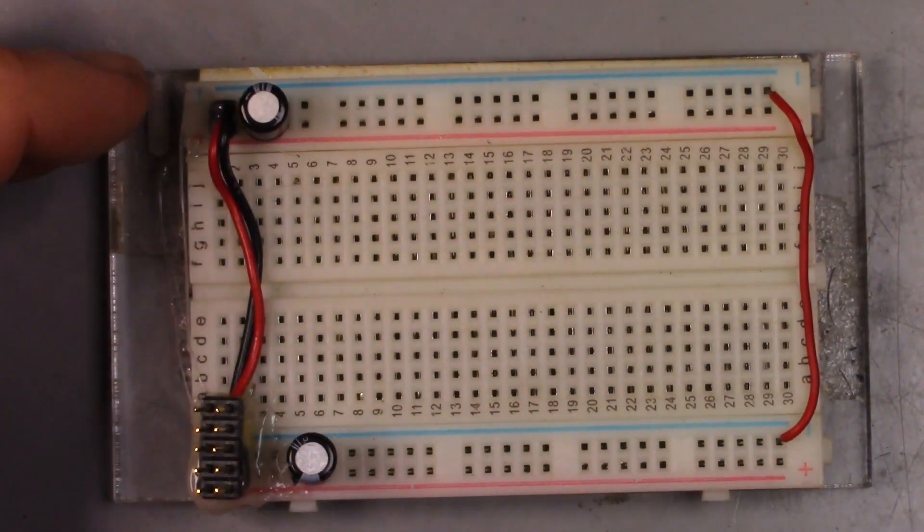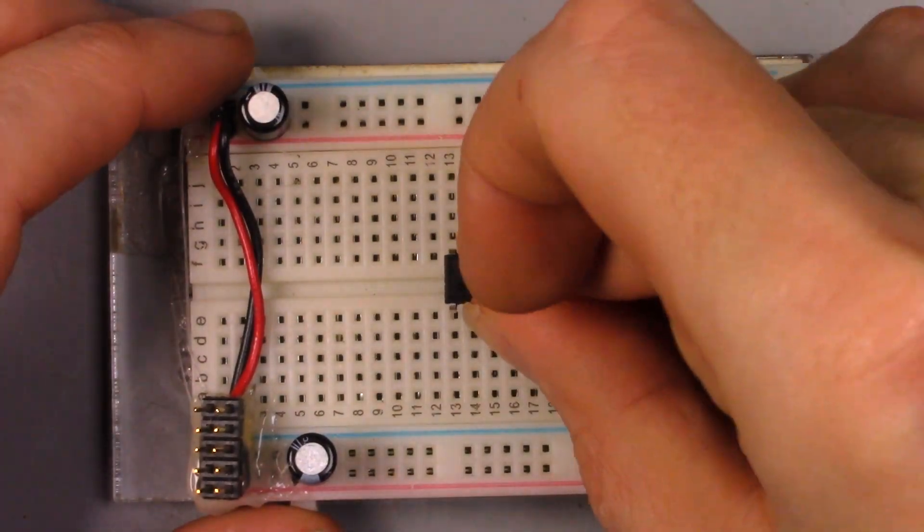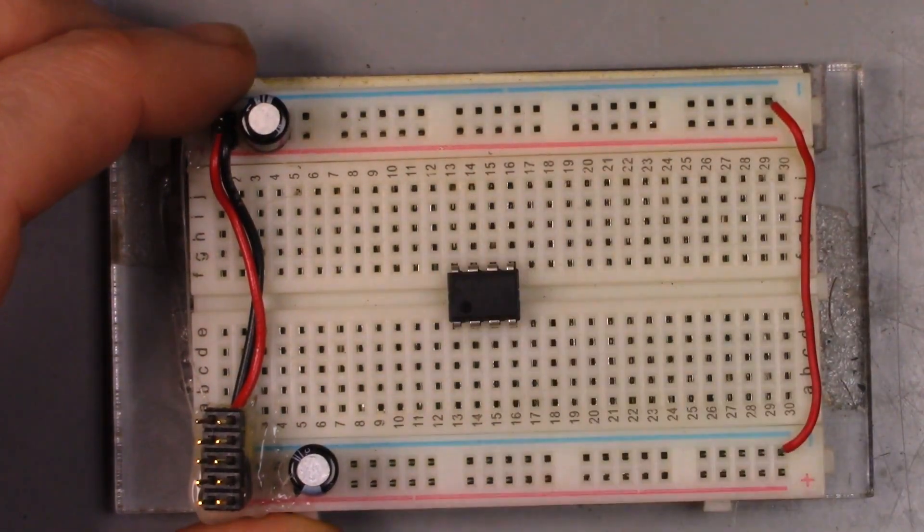Next, an op-amp chip. Let's use a good one, a TL072. You want something with very high input impedance.